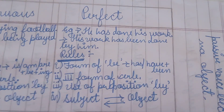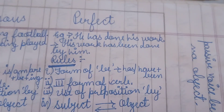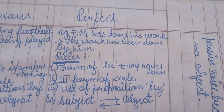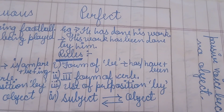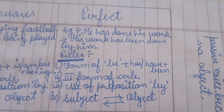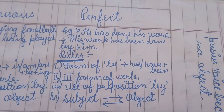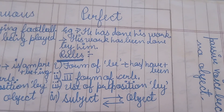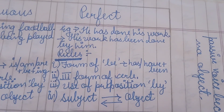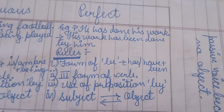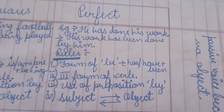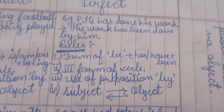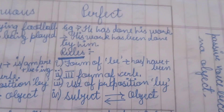Moving on to Present Perfect tense, taking the example: 'He has done his work.' The passive will be: 'His work has been done by him.' The form of 'be' used here is 'has/have' plus 'been,' depending on the subject. The remaining three rules stay the same: third form of verb — 'done,' use of preposition 'by,' and subject-object change.